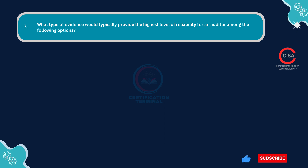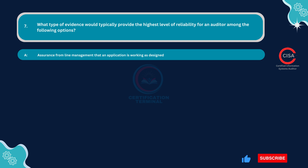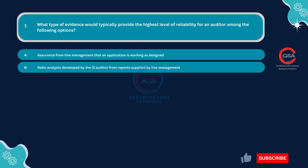Question number seven: What type of evidence would typically provide the highest level of reliability for an auditor? Option A: Assurance from line management that an application is working as designed. Option B: Ratio analysis developed by the IS auditor from reports supplied by line management. Option C: Trend data obtained from worldwide web sources.